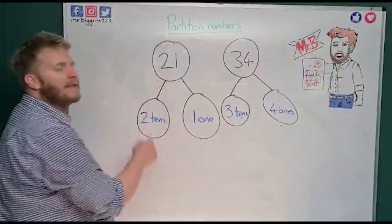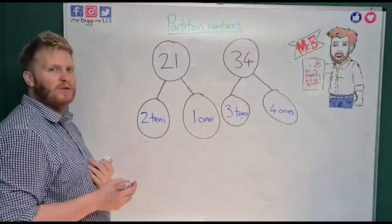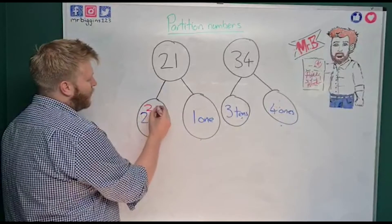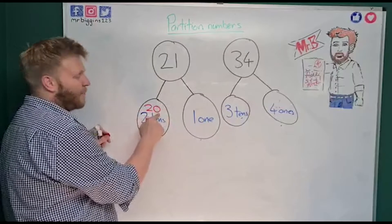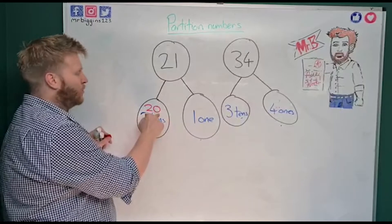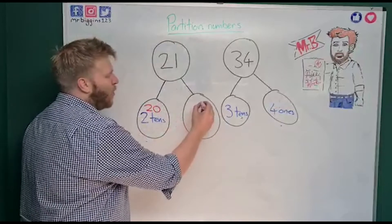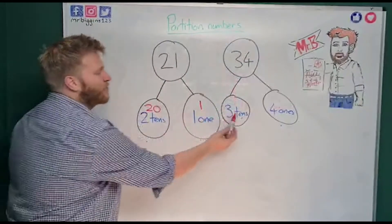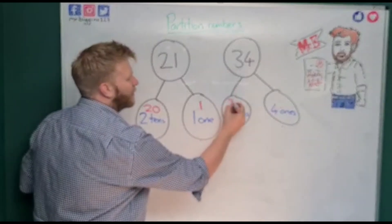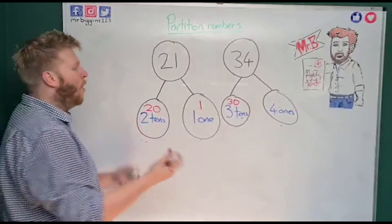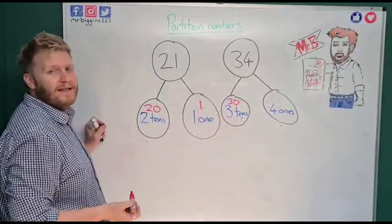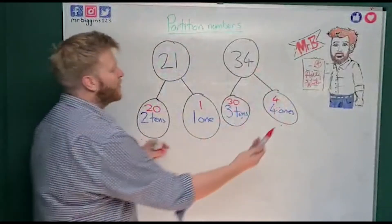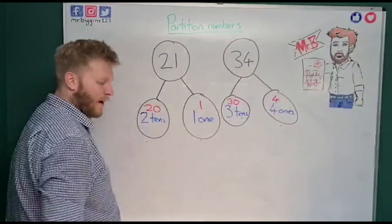We've got two tens there, but rather than write 'two tens' I want to write numerals. So I need to think: what is two tens the same as? Two tens is the same as 20 — you can see we've got our two in the tens column and then a zero because it's 20, not just two. Ones are easy because ones stay the same. So 21 is actually 20 and 1. And for 34, three tens is the same as 30 — the zero makes it ten times bigger — and the ones stays as four. So 34 can be partitioned into 30 and 4.